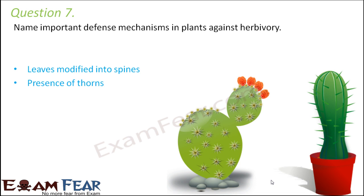Another defense is the presence of thorns. In many plants, like the rose plant, thorns are present on the stems, keeping animals and birds away. Plants also produce harmful chemical substances — for example, nicotine, opium, and caffeine. When consumed by animals, these substances can cause harm, so animals try to stay away from these toxic substances, and that is how the plants remain protected.